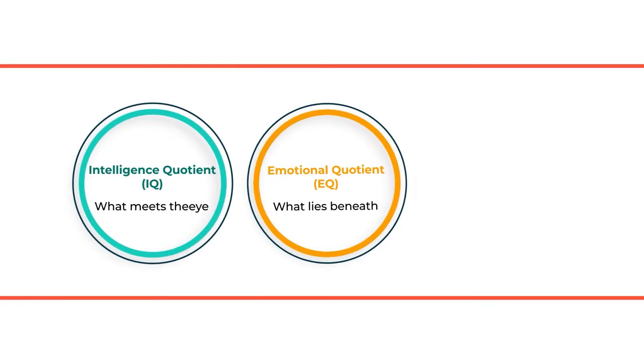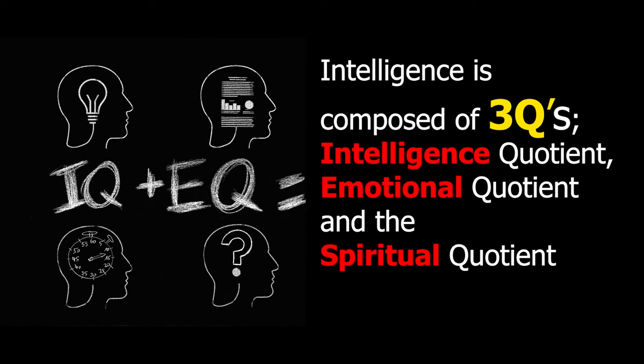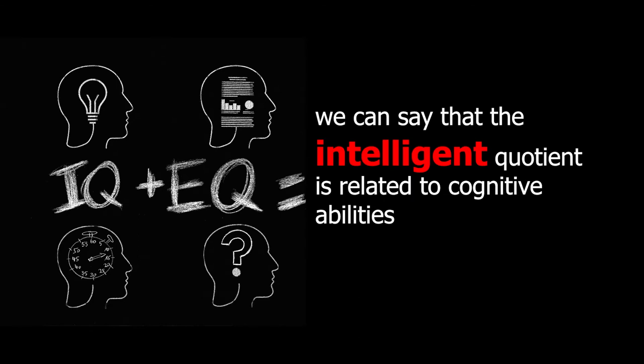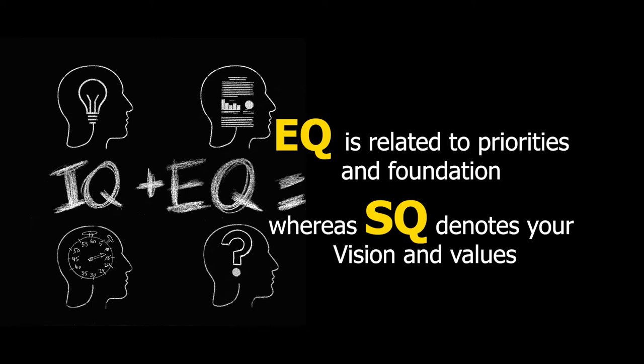IQ signifies cognitive competencies, whereas EQ signifies how the individual treats and interacts with other persons. Another very significant term is Spiritual Intelligence — the ability to understand the real and fundamental principles of life and that everything being done has a meaning, value, and worth. Intelligence is composed of three quotients: Intelligence Quotient, Emotional Quotient, and Spiritual Quotient. IQ is related to cognitive abilities, EQ to priorities and foundation, whereas SQ denotes your vision and values.